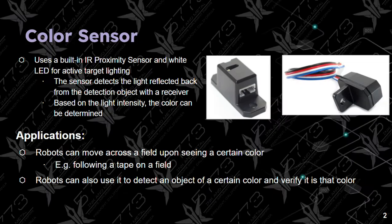The first sensor we will be talking about is the color sensor. It uses a built-in IR proximity sensor and white LED for active target lighting. The sensor detects the light reflected back from the detection object with the receiver. Based on the light intensity, the color can be determined.